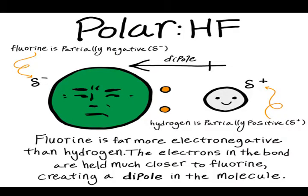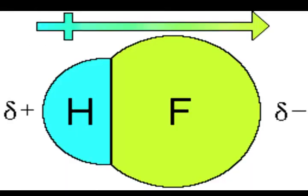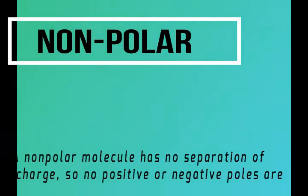An example of a polar bond is hydrogen and fluorine (HF). Fluorine is far more electronegative than hydrogen, so the electrons in the bond are held much closer to fluorine, creating a dipole in the molecule. The negatively charged electrons are concentrated around fluorine, giving fluorine a partial negative charge and hydrogen a partial positive charge. Be careful not to get confused — even though both sides are partially charged, this is a polar covalent bond, not ionic.